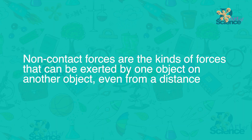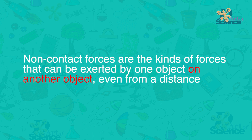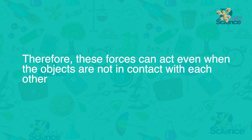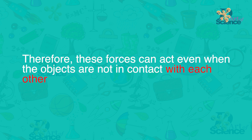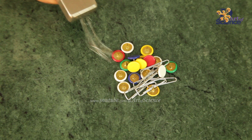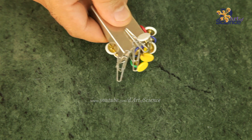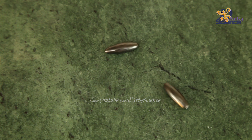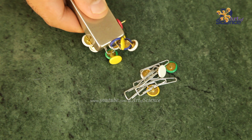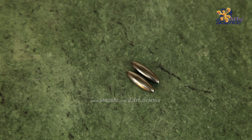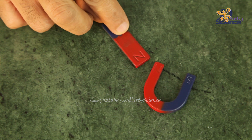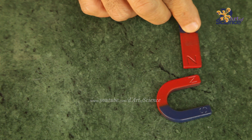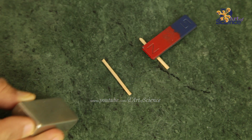Now we look at non-contact forces — forces that can be exerted by one object on another even from a distance, acting even when the objects are not in contact. First is the magnetic force — the force exerted by a magnet. A magnet can exert this force without actual contact on iron or other magnets. It can attract iron or ferrous objects, and with other magnets it can both attract and repel, pulling or pushing without any physical contact.